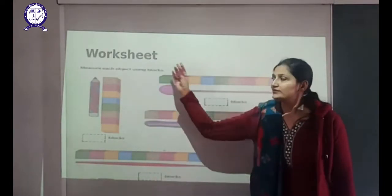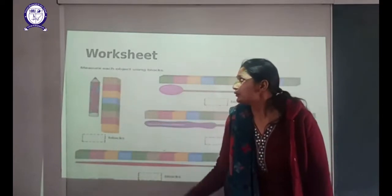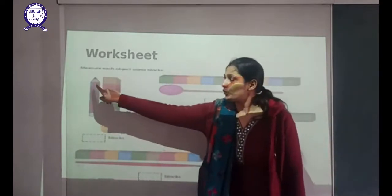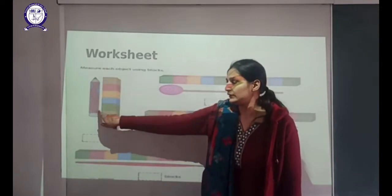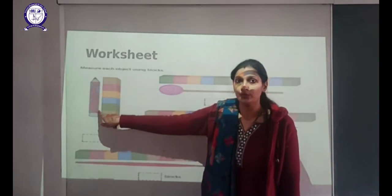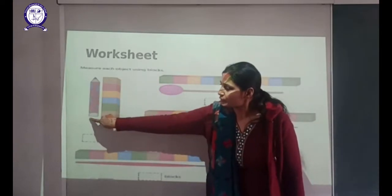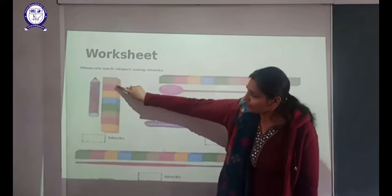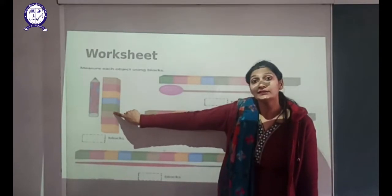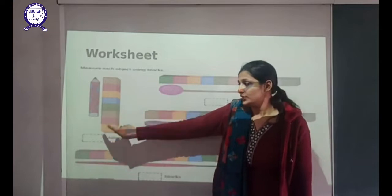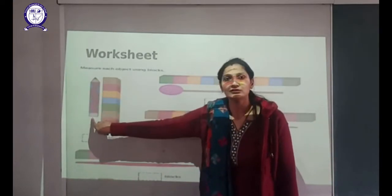Now this is a worksheet — measure each object using blocks. If we want to measure the length of this crayon, how many blocks do we need? Counting: 1, 2, 3, 4, 5, 6. We need 6 blocks to measure the length of this crayon.